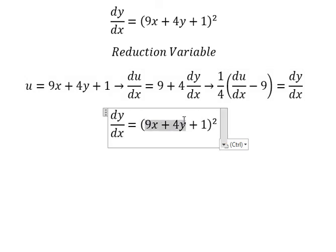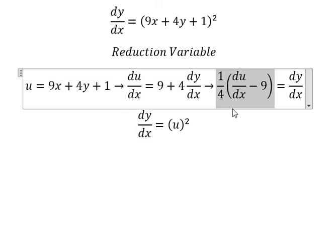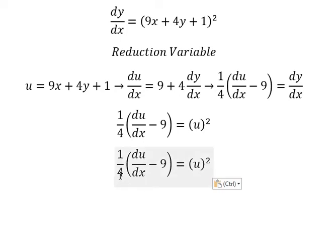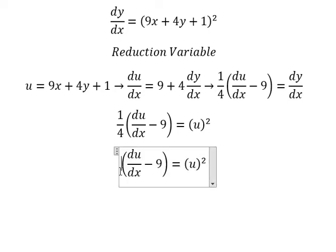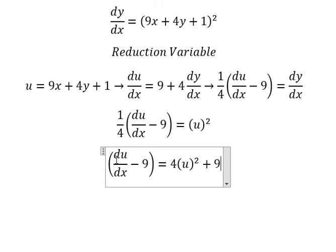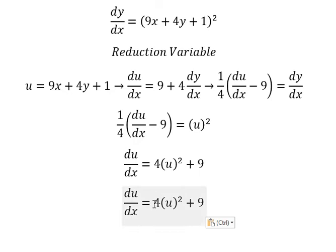So this one we change by u, and this one we change by this expression. I will put number four to the right, and I will put negative number nine to the right.